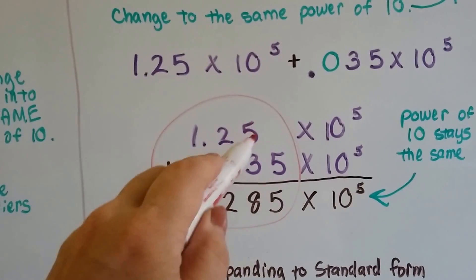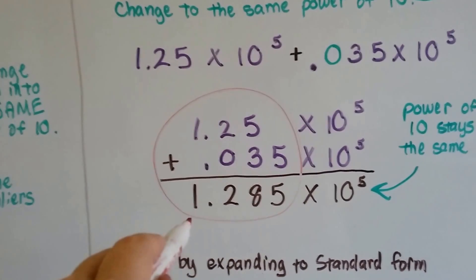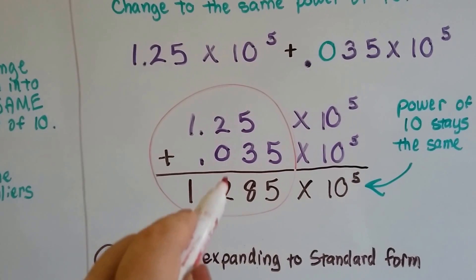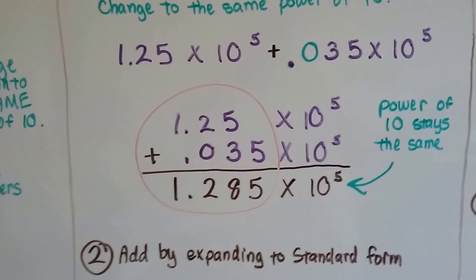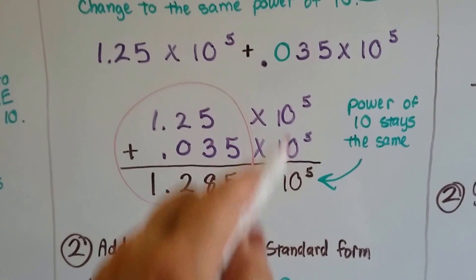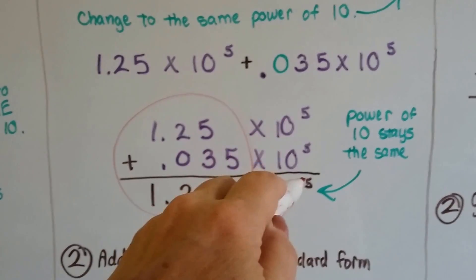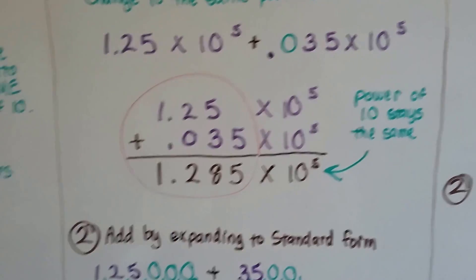Five drops down. Five and three is eight. Two and zero is two. And we drop down the one. I've got 1.285 times 10 to the 5th power. So remember, we don't do anything with these. Once we get them to match, it just drops down.